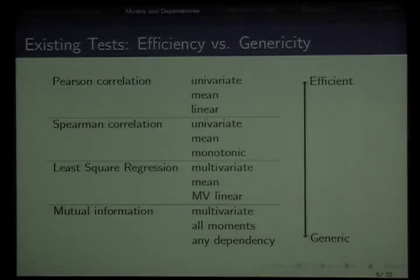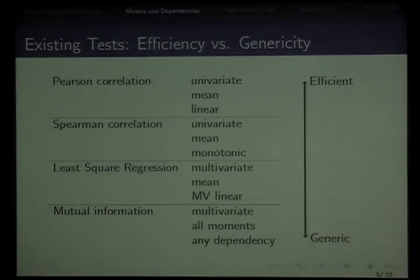Given all these choices, you have a trade-off between efficiency and genericity. For the usual side-channel distinguisher, which is Pearson correlation, you assume a Hamming weight model and detect linear dependencies between observations and predictions. It's not very generic, it's rather specific, but it's very efficient because it's univariate, only estimates means, so it's very fast when the assumption holds.